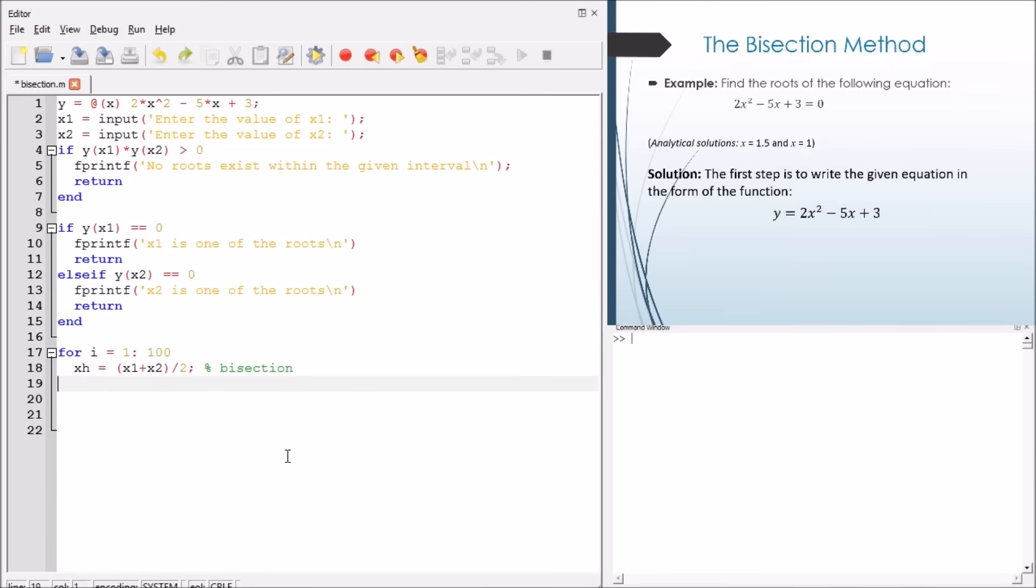This is the loop. This loop, we try about 100 bisections because if the convergence happens, we will break the loop. So actually this is an arbitrary number for bisectioning. Now we compute xh and then we make a check y of x1 and xh. If they are less than 0, that means there's a root between x1 and xh.